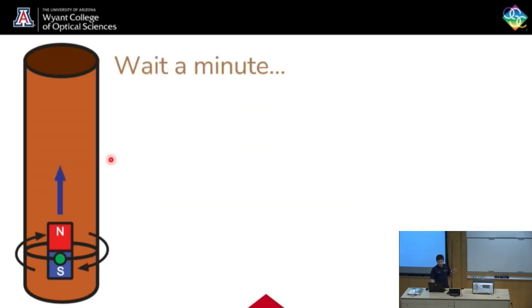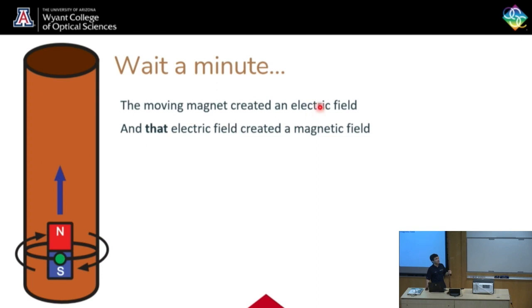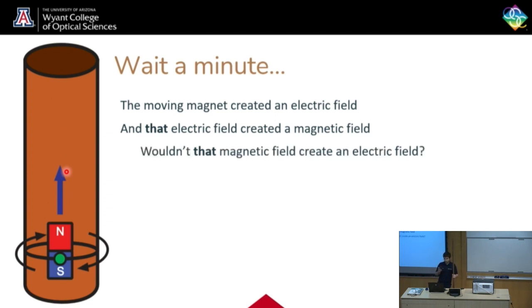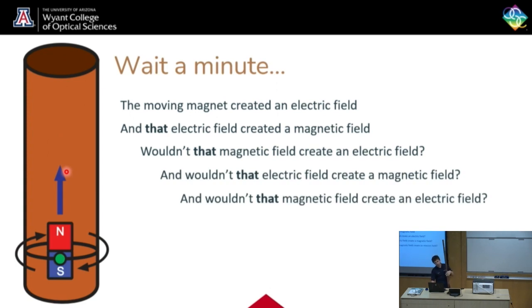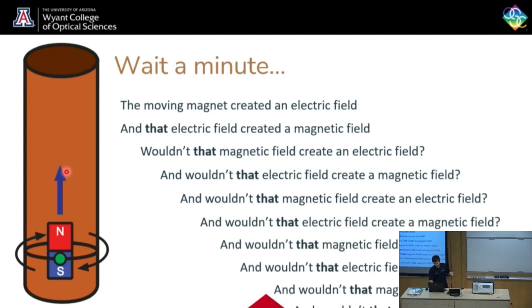Now you might be thinking: the moving magnet created an electric field, and that electric field created a magnetic field which slowed down the magnet. But this magnetic field didn't exist before — it went from no magnetic field to magnetic field. That's a changing magnetic field. And changing magnetic fields create electric fields. So there would be another electric field created, which created another current in the opposite direction. But that's a changing electric field — wouldn't that create a magnetic field? And then that magnetic field would create an electric field, and that electric field would create a magnetic field, and so on and so forth. The answer is yes, it would. All of these fields add up — they get weaker each time, but they all add up, and it still ends up slowing down the magnet.